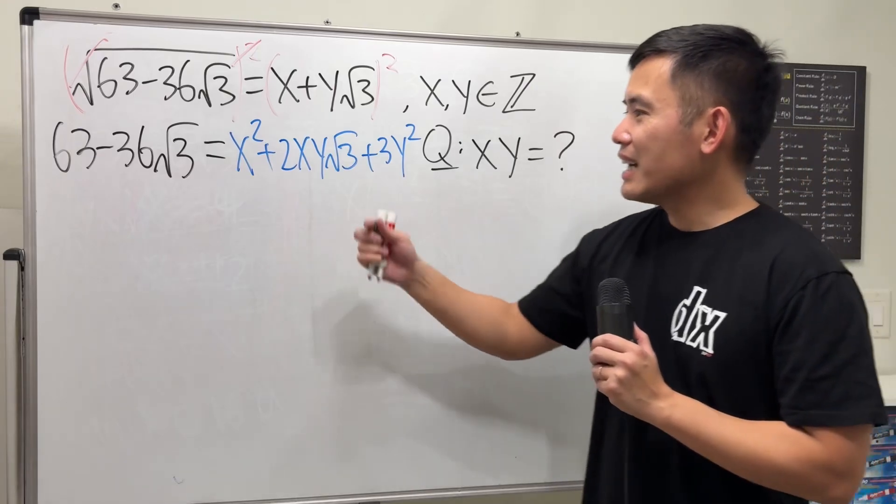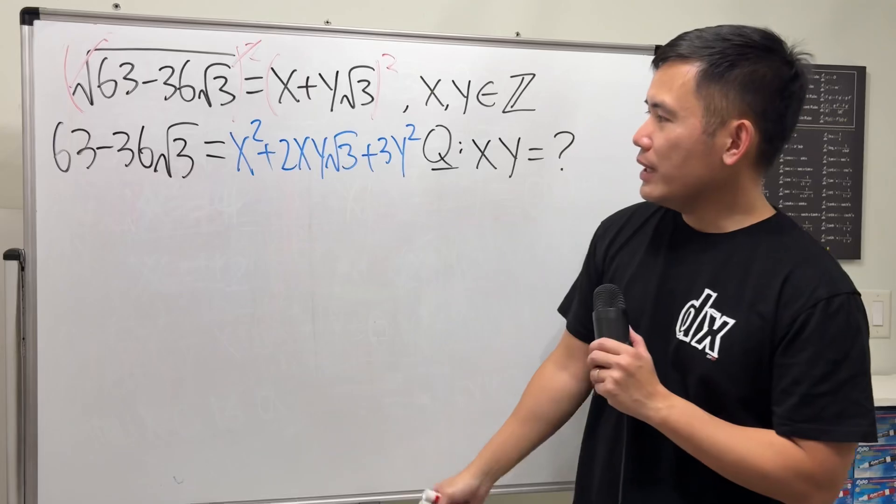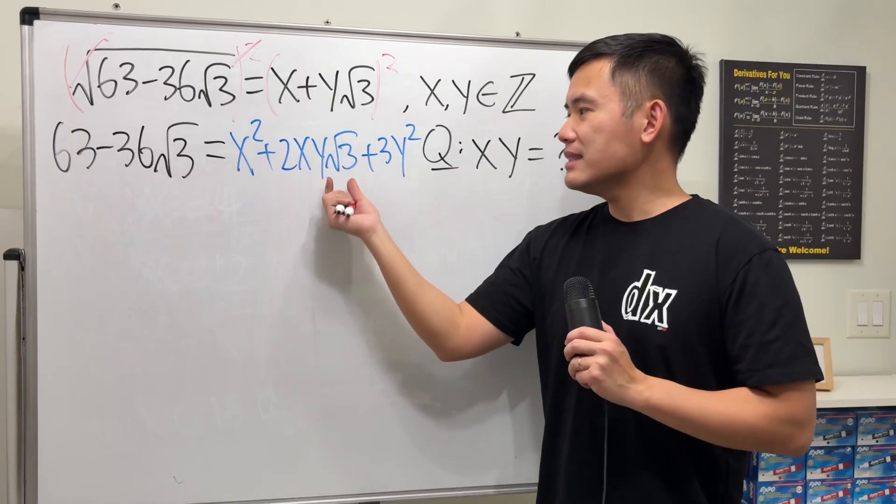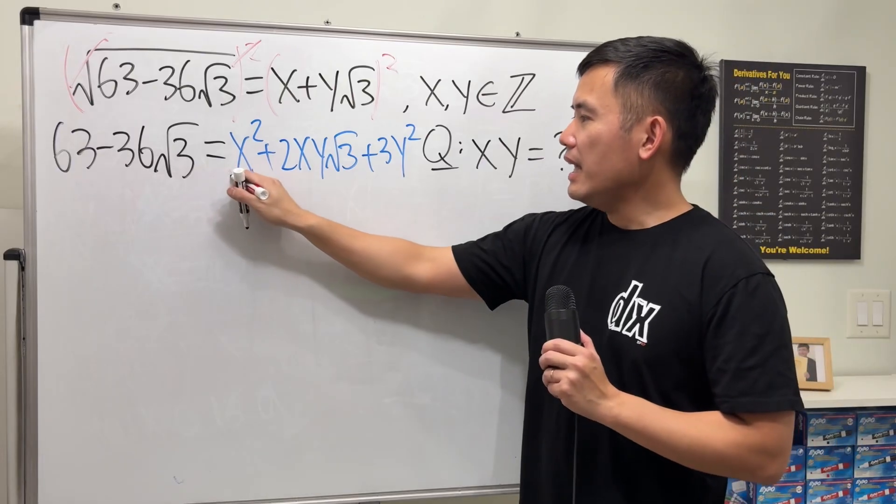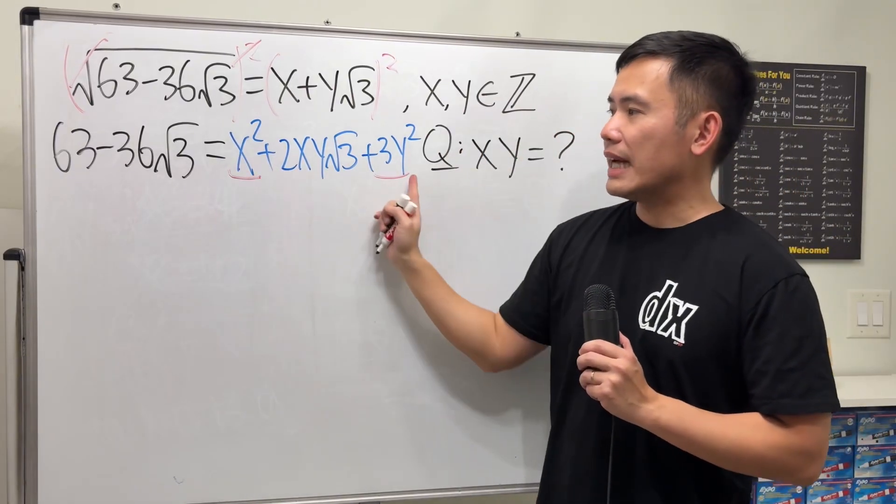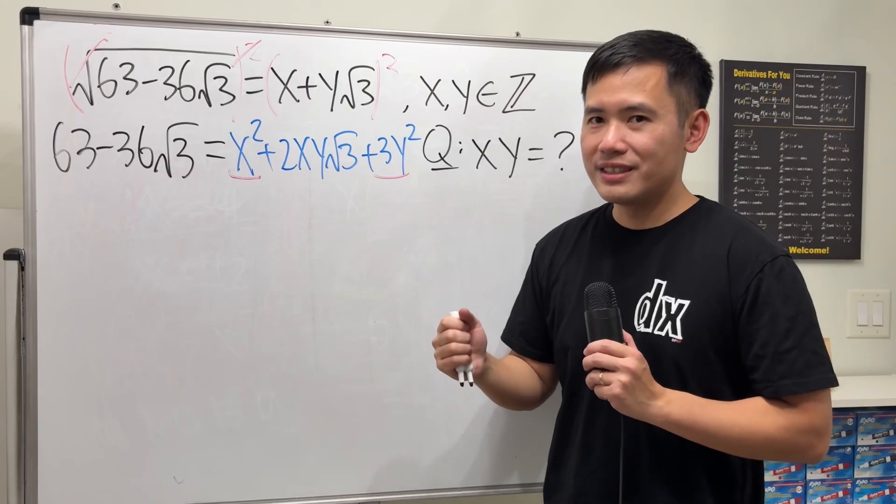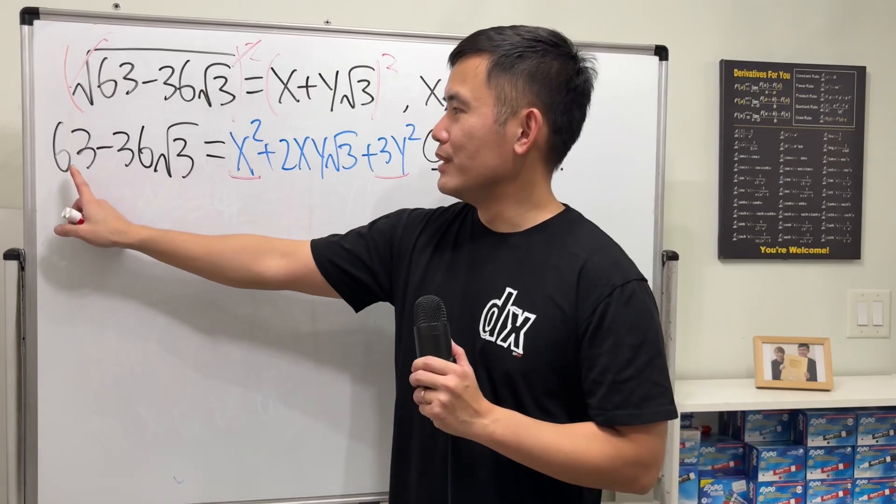Have a look. On the left hand side, this part has the square root of 3. On the right hand side, only this part has the square root of 3. Because x and y are integers, this and that together have to be integers. In fact, this and that together has to be equal to 63.